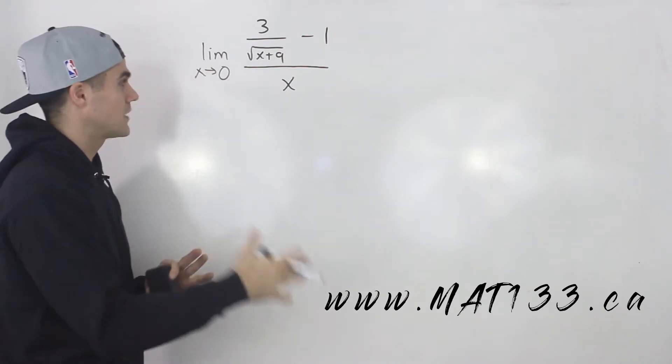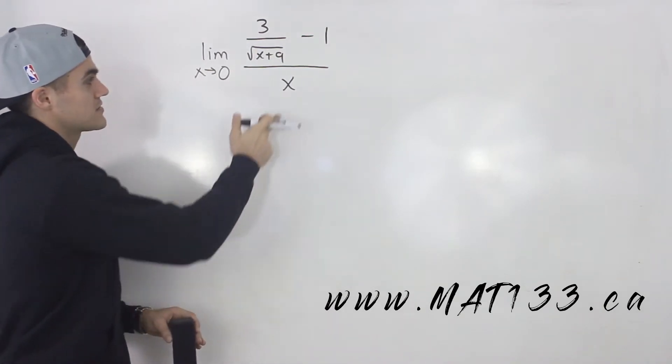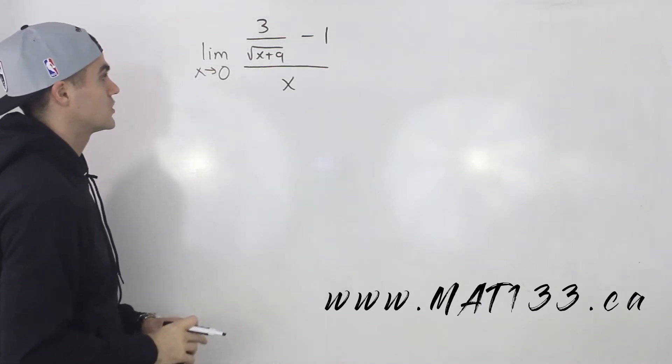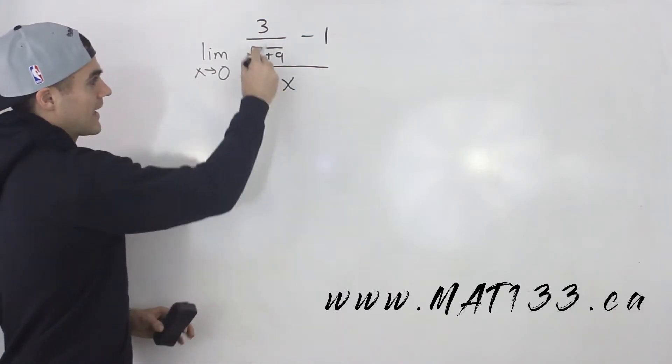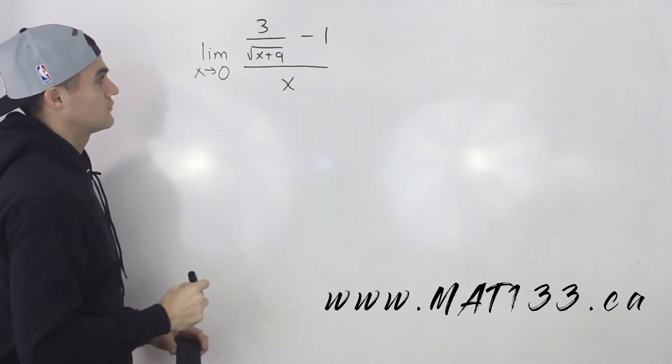First thing you want to check with limits, can you make a direct substitution? Well, if we plug in 0 for x, notice that denominator is going to be 0. So that unfortunately is not going to work. Notice that we can't cancel anything out. We can't really factor this up here. So we're going to have to use some kind of other method.